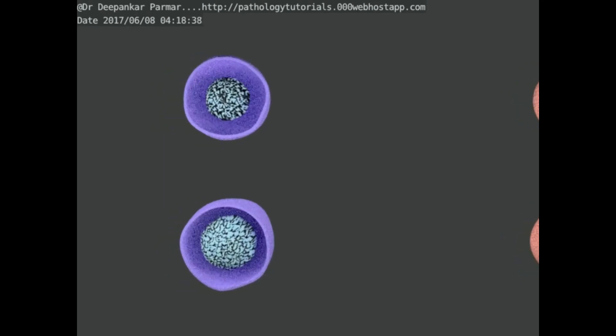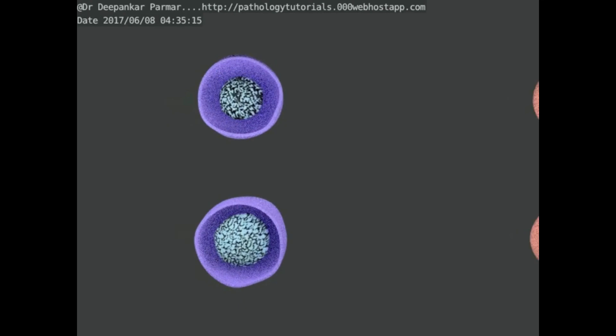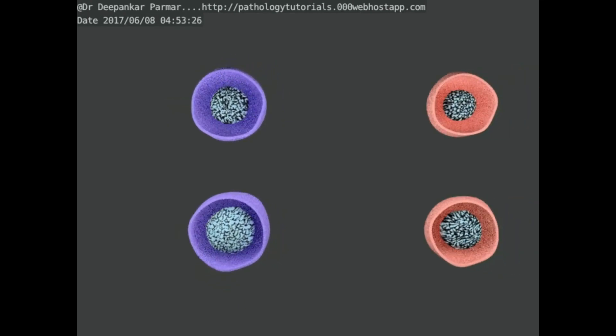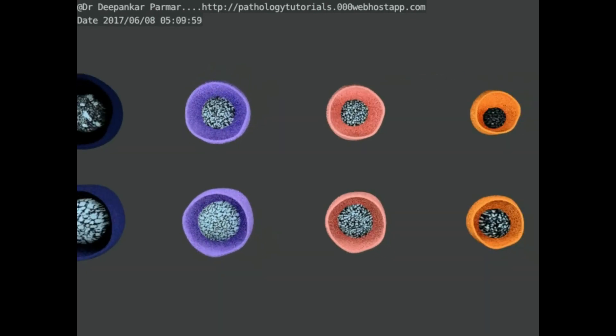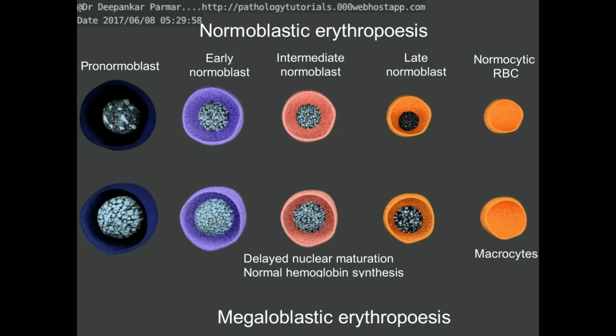Here, the whole pathological process is shown in a single view with the normal erythropoiesis shown above and a megaloblastic erythropoiesis shown below demonstrating larger cells with normal hemoglobin synthesis and delayed nuclear maturation as for stage.